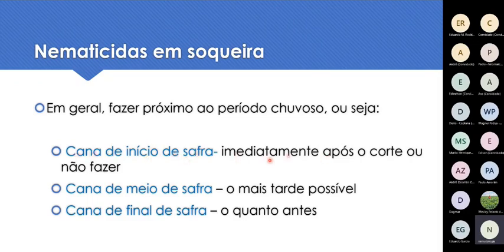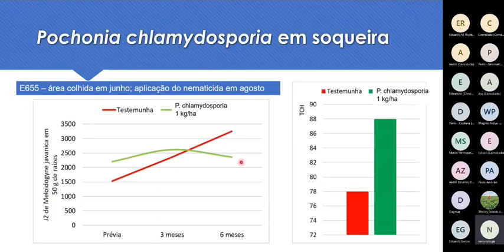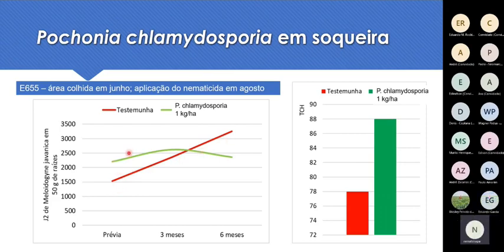Nematicida em soqueira vale muito a pena usar, mas de preferência próximo ao período chuvoso. Se for uma cana de começo de safra, faz-se imediatamente após o corte. Se atrasar muito, não adianta mais. Numa cana de meio de safra, faz-se o mais tarde possível. Numa cana de final de safra, o quanto antes, cortou, aplicou o produto. Aqui exemplos de produtos biológicos em soqueira: a população de nematóides na testemunha subiu, mas onde apliquei Pochonia, desceu. A diferença de produtividade foi de 10 toneladas a mais onde foi feito o tratamento. A cana foi colhida em junho e o nematicida aplicado em agosto — às vezes não dá para aplicar próximo da chuvosa, mas mesmo assim o resultado foi bastante interessante.